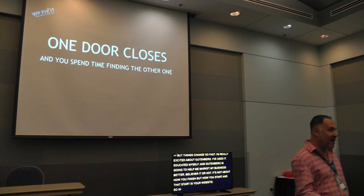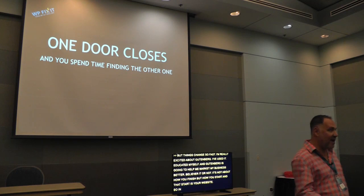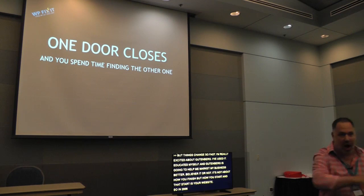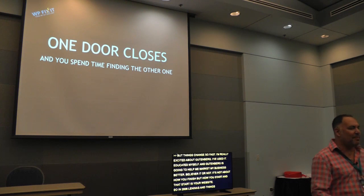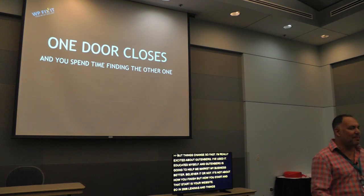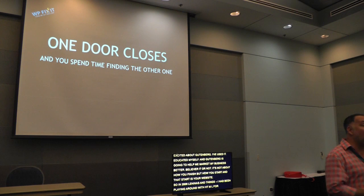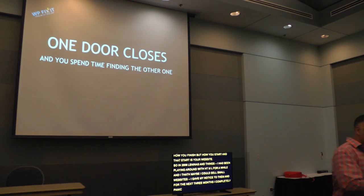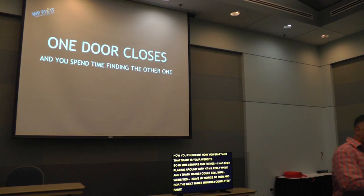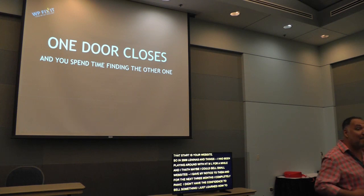In 2006, Linens and Things was purchased by a private equity firm, and they had one goal: liquidate all inventory and file bankruptcy. Luckily, I had seen the writing on the wall. I had been playing around with HTML and CSS for a while and thought maybe I could sell websites to small business owners. I gave my notice to Linens and Things, and for the next three months, I completely panicked. I didn't have the confidence to sell something I'd just learned how to do. But confidence builds rapidly when your rent is past due and you're hiding your car so it doesn't get repossessed.